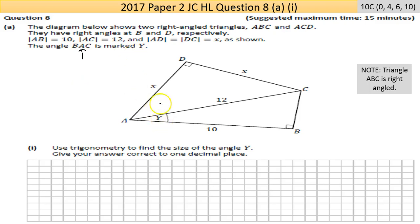Part 1 says use trigonometry to find the size of angle Y, give your answer correct to one decimal place. You're thinking is it Pythagoras theorem or the sine, cosine, tan ratios.